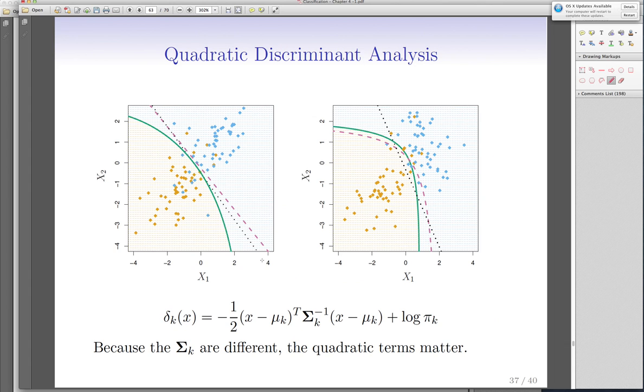So, by just relaxing the assumption of constant variance and covariance for all groups, we will be dealt with quadratic discriminant functions.